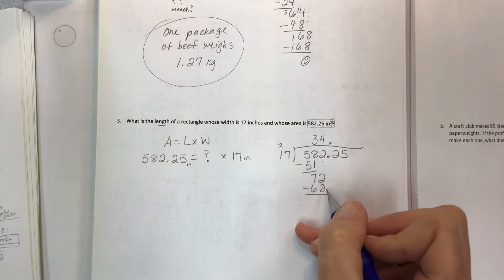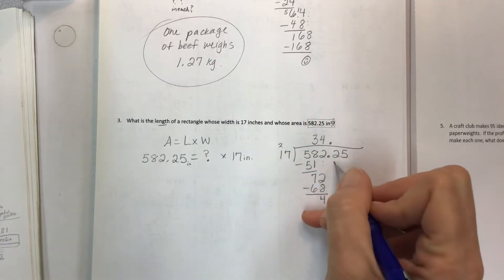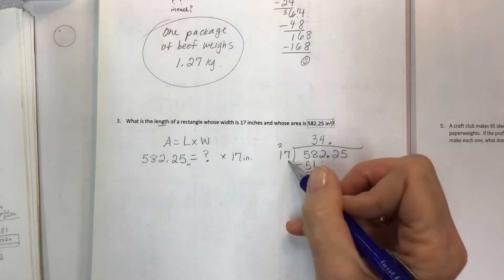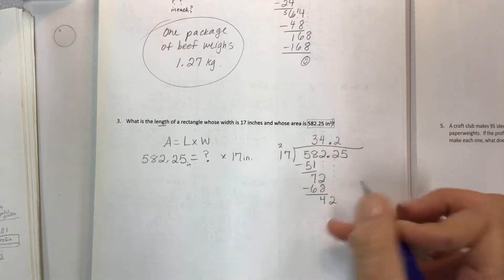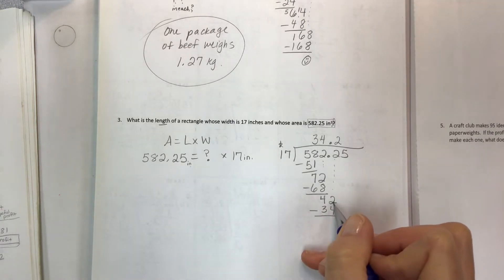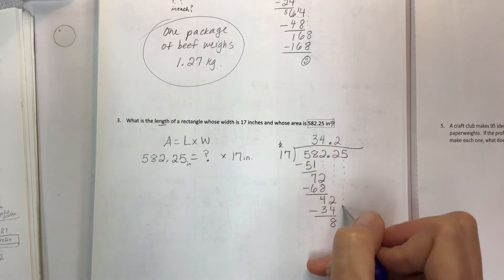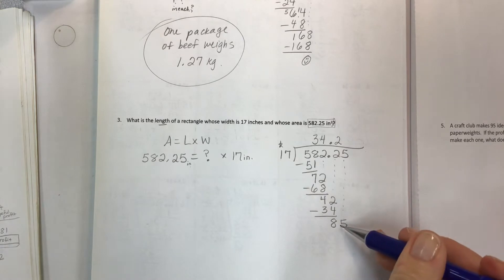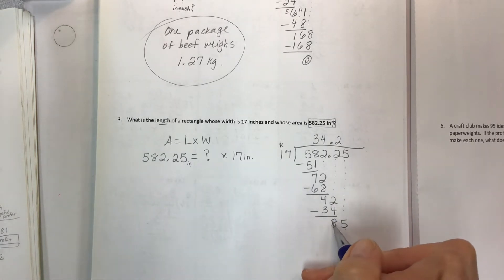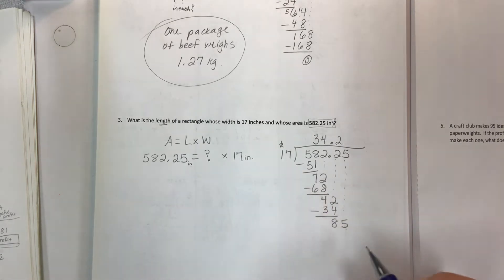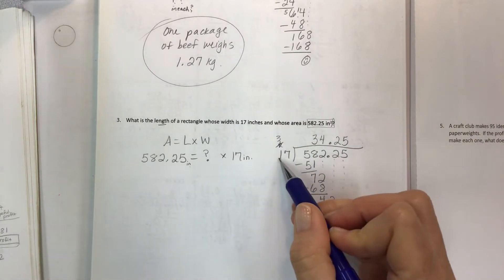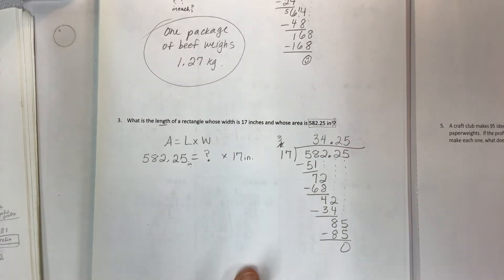Seven is less than 17, so bring down the two. Now 72 divided by 17. Four times seven is 28, carry the two. Four times one is four plus two is six. The difference between 68 and 72 is four. Bring down the next one. 42 divided by 17, two times. Two times seven is 14, two times one is two plus one is three. The difference is eight. Bring down all the way down. 85 divided by 17. Five times seven is 35, five times one is five plus three is eight. Nothing left.